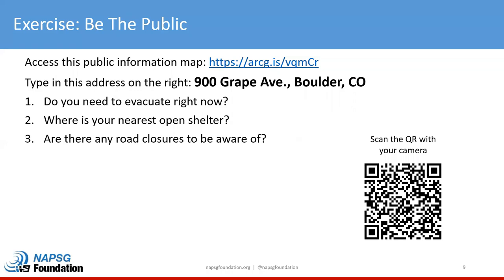This is a chance for you to step outside your normal role and pretend for a minute that you are the general public — there's a wildfire near you, and you've been provided a link to a public information map. Open your camera, point at the QR code without taking a picture, and you should get prompted to open the map in your browser. Once open, pretend you live at 900 Grape Avenue, Boulder, Colorado, and try to answer three questions. It's not a quiz — if you have trouble, maybe we didn't design our prototype very well.